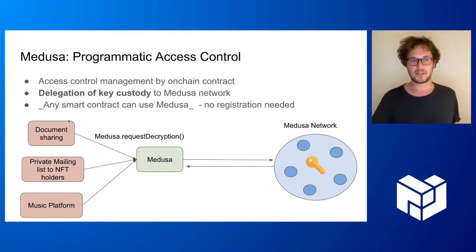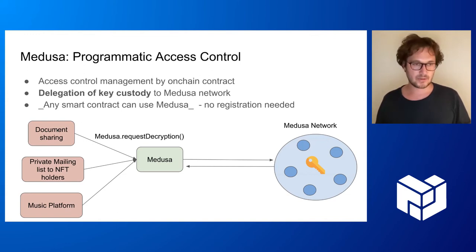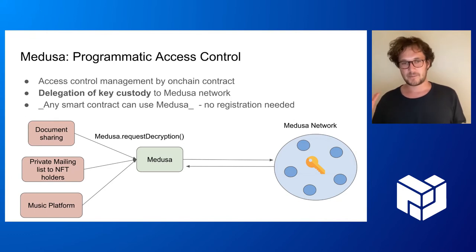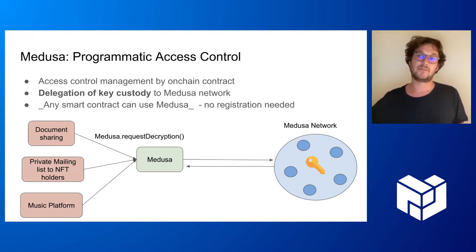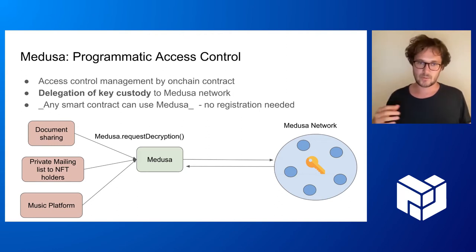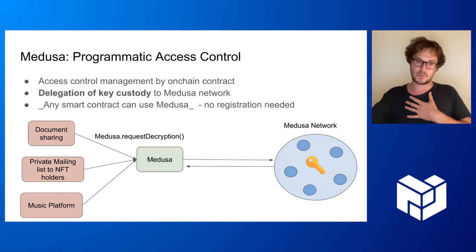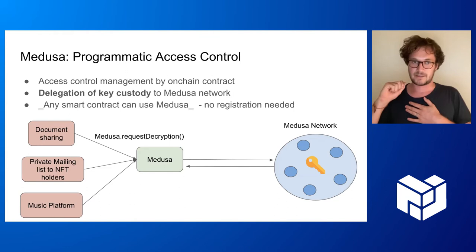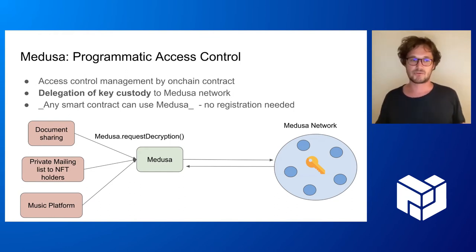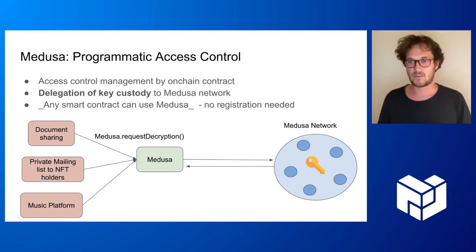With this, you can do things like programmatic access control in a very easy manner. Imagine plenty of applications that need access control — document sharing, private mailing lists, music platforms, whatever. They delegate their key to Medusa in some sense. They ask the Medusa network to operate on their behalf. Any smart contract in Medusa requires no registration — you just say, hey, Medusa decrypt me this thing. It's like one call.